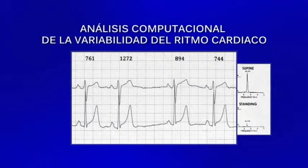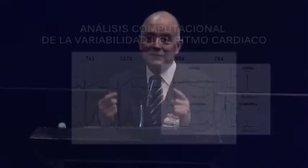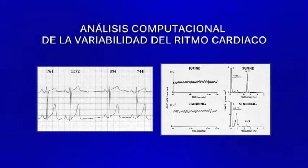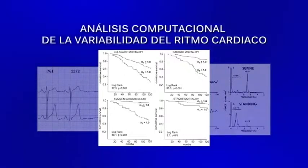Si una computadora nos toma el pulso, nos dice que un latido mide 751 milisegundos y el siguiente 1272. La variación temporal de estos latidos está dictada por el influjo muy fino de las dos ramas del sistema nervioso autónomo: la simpática y la parasimpática. Podemos hacer análisis de varianza de esta variabilidad de la frecuencia cardíaca para estimar cuánto tono parasimpático está influyendo sobre el corazón, análisis espectrales para ver el equilibrio simpático-parasimpático, y también análisis de fractalidad de la variabilidad de la frecuencia cardíaca.